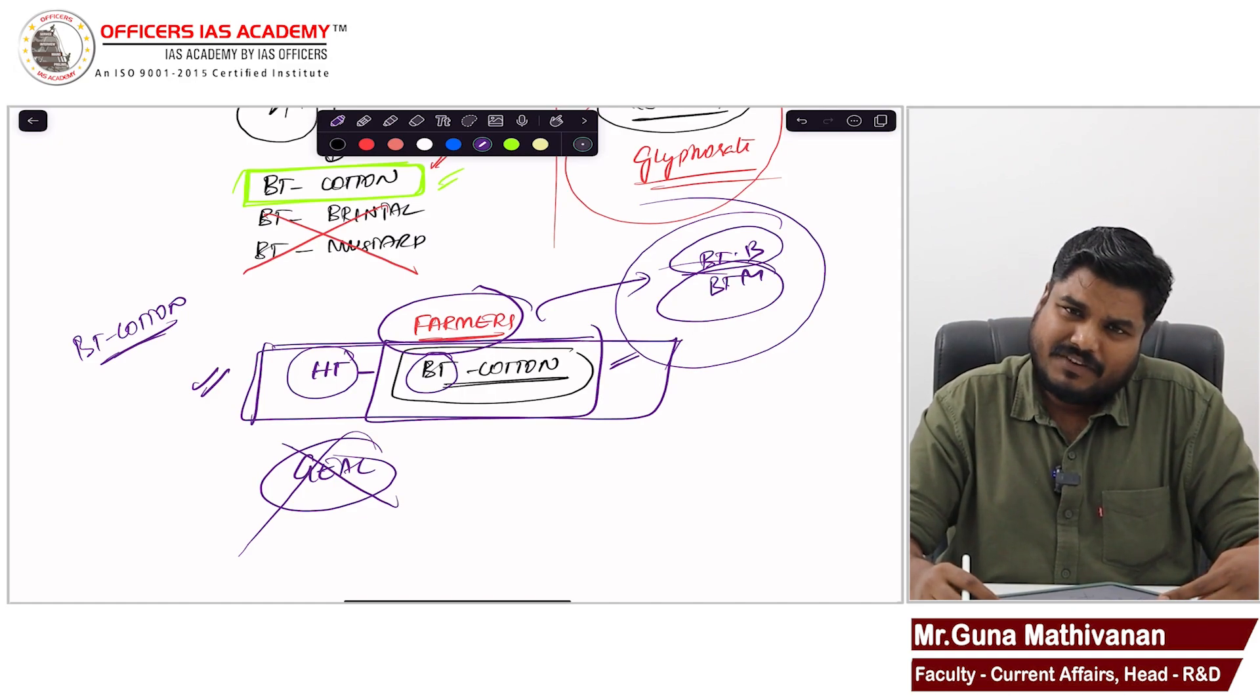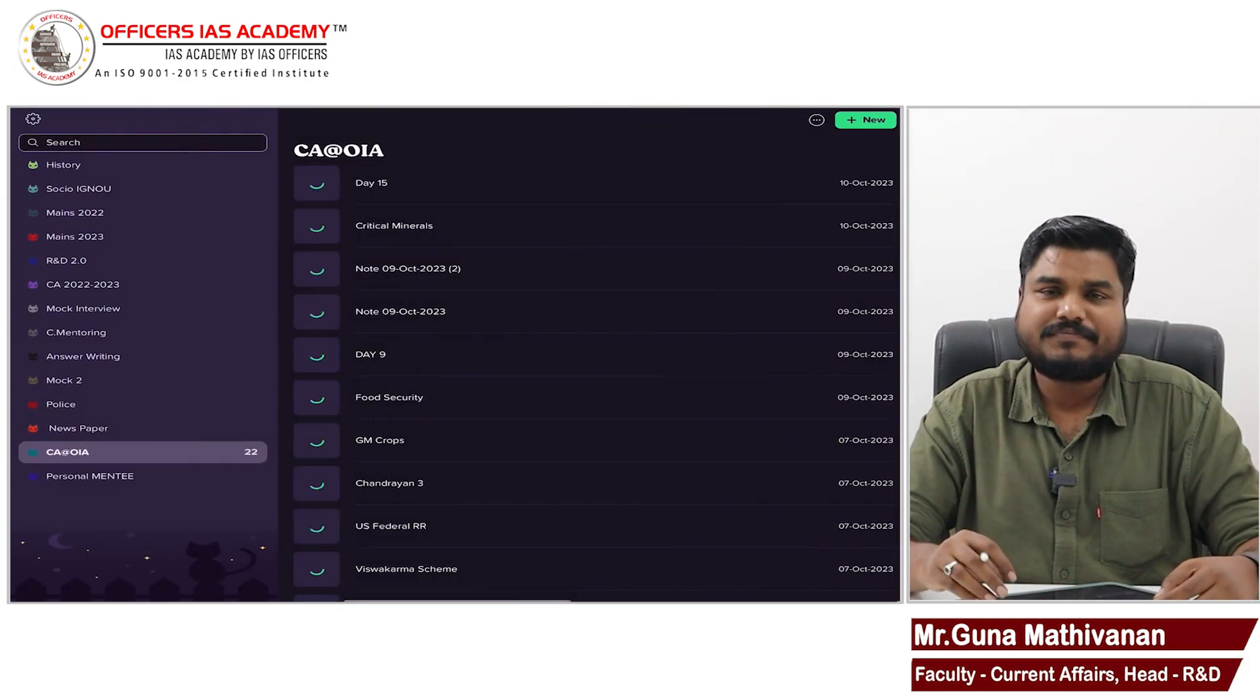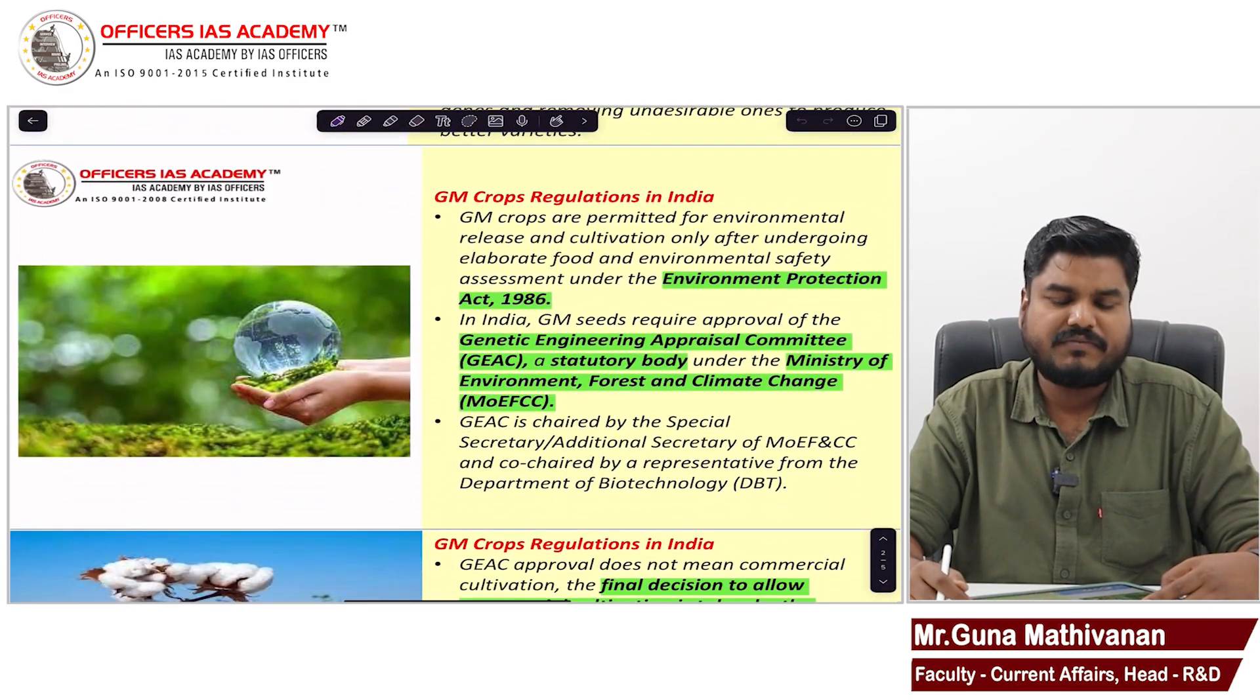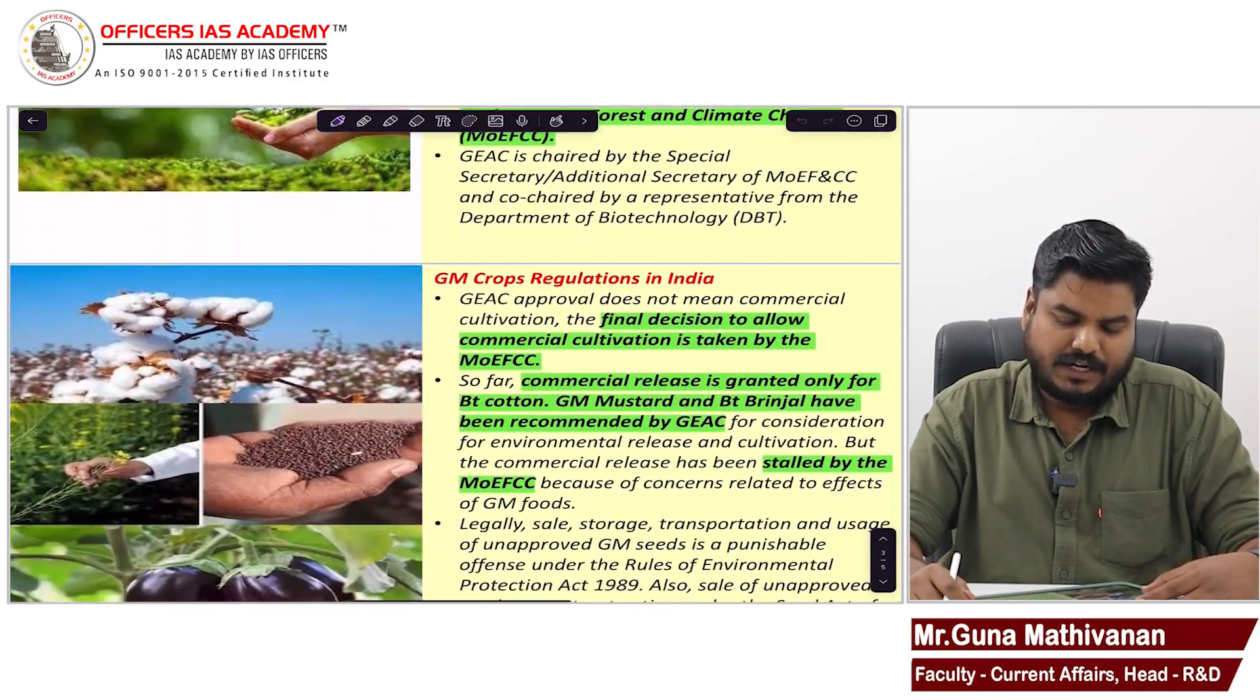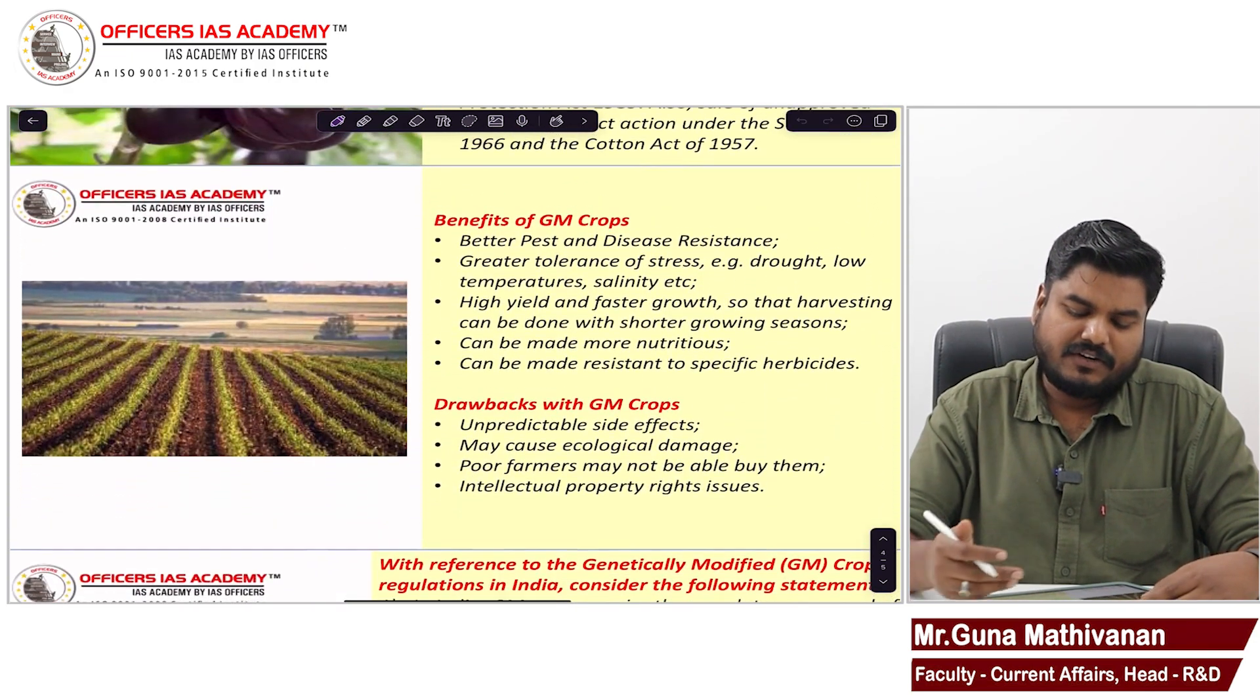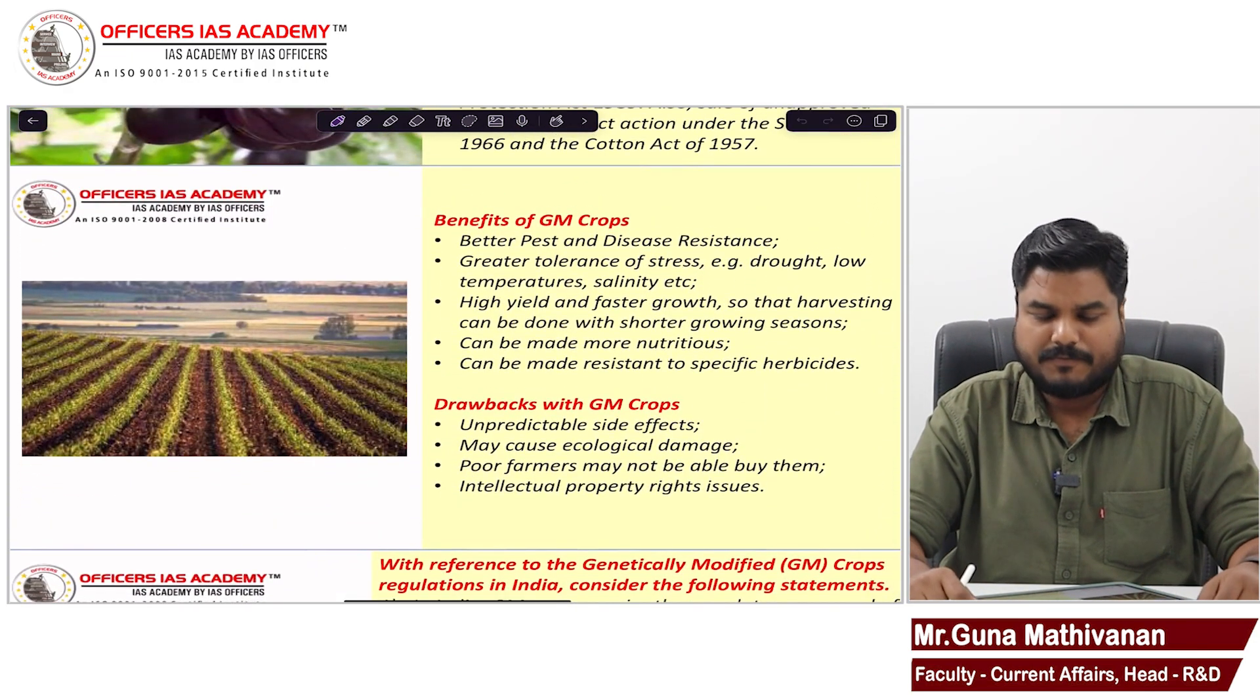So there are benefits. There are issues. So here I have given the information about the GM crops. You can go through. You can pause the video, make notes. Write about the regulations in India. I have mentioned here. Benefits and drawbacks also I have mentioned here. You can go through.